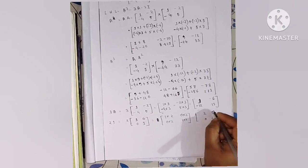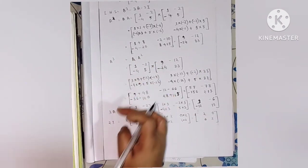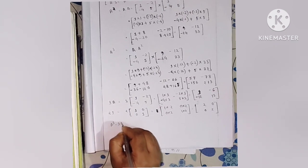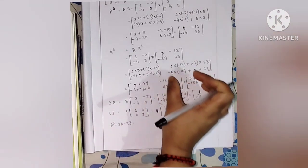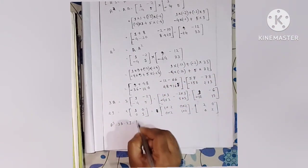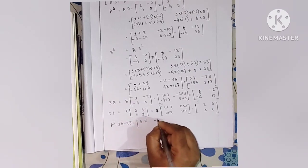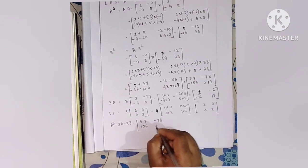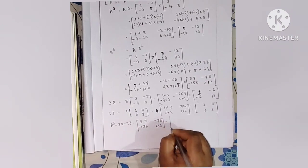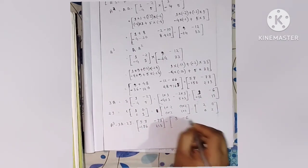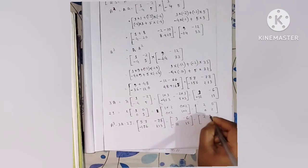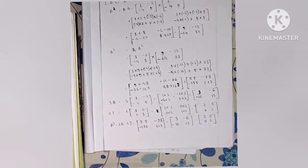And 2I equals 2 times the identity matrix, which gives [2, 0; 0, 2]. Now we compute A cubed minus 3A minus 2I by substituting all three matrices.